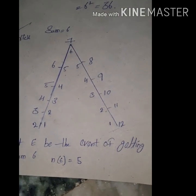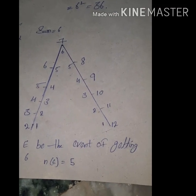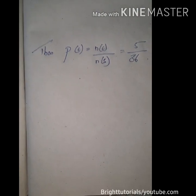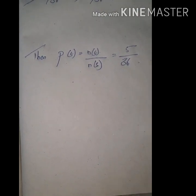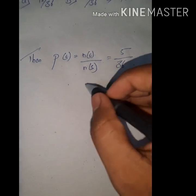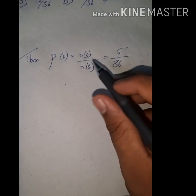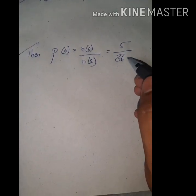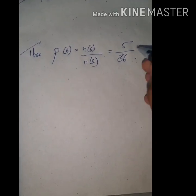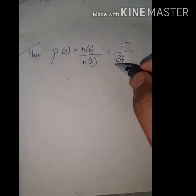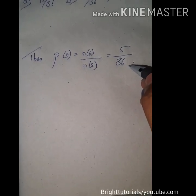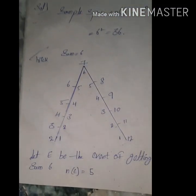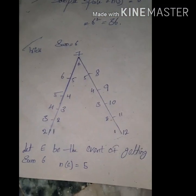Now using this trick we have found n(E). We know that probability of any event equals number of favorable outcomes divided by total number of outcomes: P(E) = n(E) / n(S). Substituting the values, n(E) = 5 and n(S) = 36, so P(E) = 5/36. Option B is the correct answer. Using this trick you can solve all problems involving two dice.